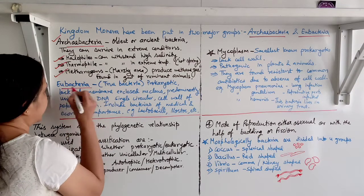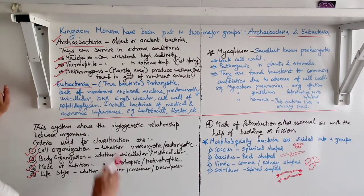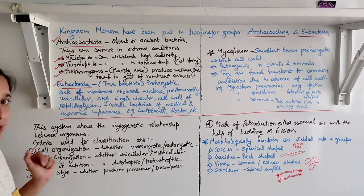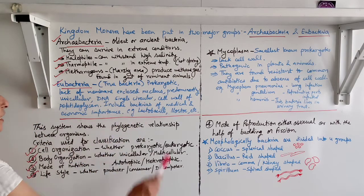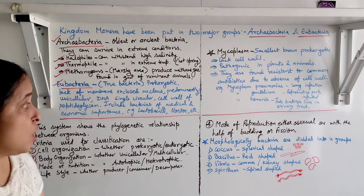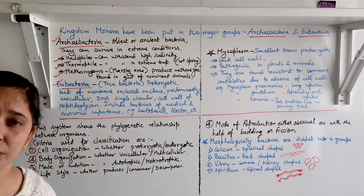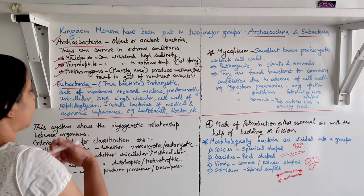The next group is Eubacteria, also called true bacteria. They are prokaryotic, lack a membrane-bound nucleus, and are predominantly unicellular. DNA is single and circular. Cell wall is of peptidoglycan. They include bacteria of medical and economic importance. Examples: Lactobacilli help in curd formation; Nostoc has heterocysts and helps in nitrogen fixation.